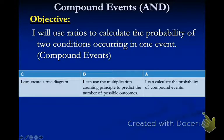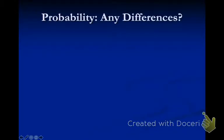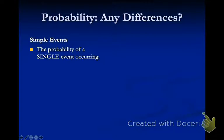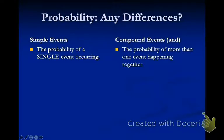Our objective today is to use ratios to calculate the probability of two conditional events occurring at once. We're doing compound events today and Wednesday, and today's compound events are exclusively with the word 'and' in them. Simple events are the probability of one event occurring, where compound events — and especially 'and' — is the probability of more than one event happening together.